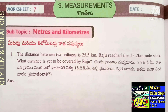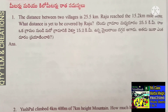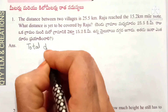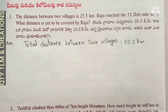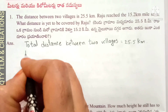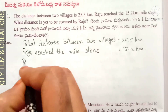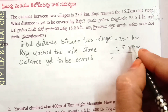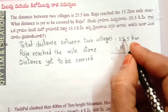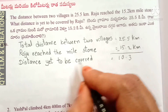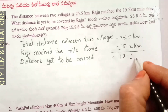The distance to be covered by Raju: total distance between two villages is 25.5 kilometers, Raju reached the milestone is 15.2 kilometers. Distance to be covered is equal to — subtracting here: 5 minus 2 is 3, 5 minus 5 is 0, 2 minus 1 is 1. So that is equal to distance to be covered is equal to 10.3 kilometers.